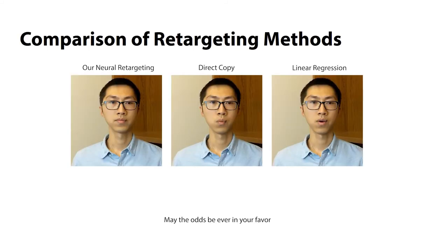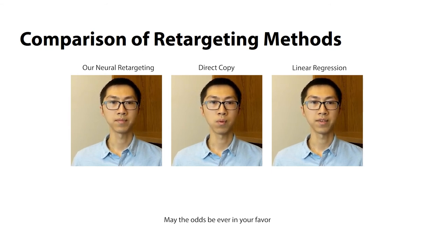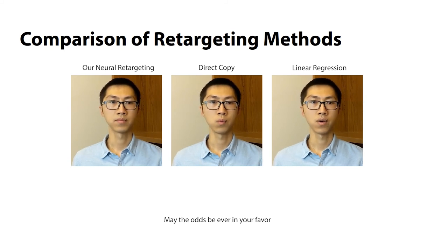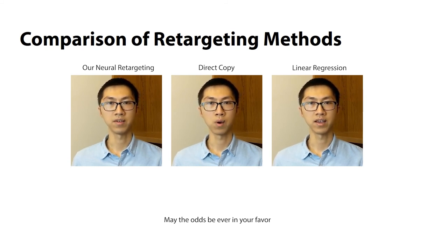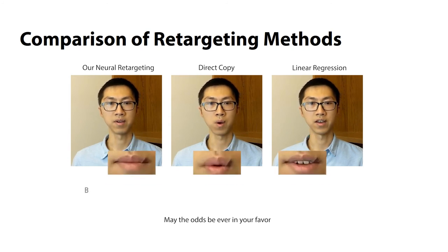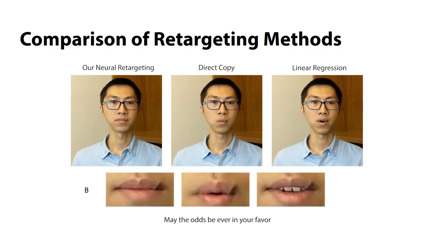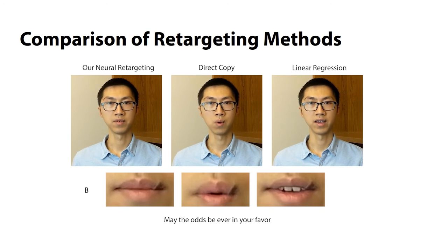We have evaluated several aspects of our pipeline, comparing our retargeting to baseline methods: 'May the odds be ever in your favor.' Directly copying parameters leads to a rounded mouth that looks unnatural. Linear regression has trouble closing the mouth fully, such as at B in the word 'be': 'May the odds be ever in your favor. May the odds be ever in your favor.'